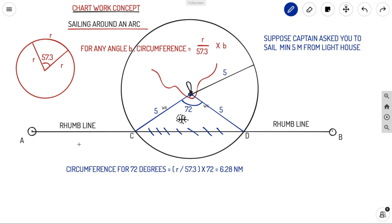So you got the answer. Now you know the total distance you will be traveling: from A to C straight rhumb line (you can measure with your compass), and your circumference that you already calculated 6.28 nautical miles, plus your D to B rhumb line. That means your circumference from C to D is 6.28 nautical miles.